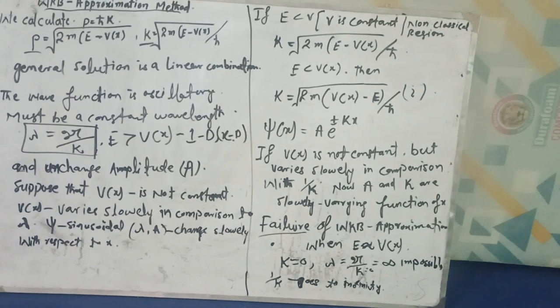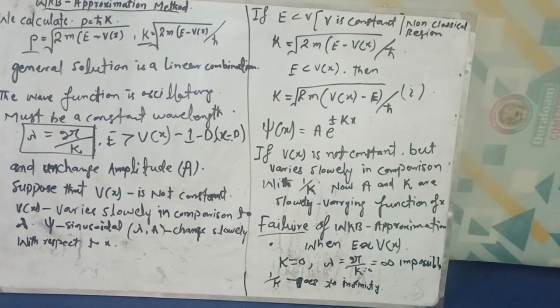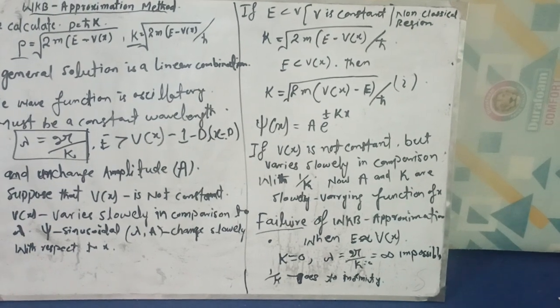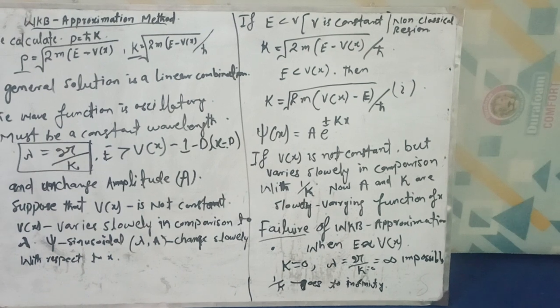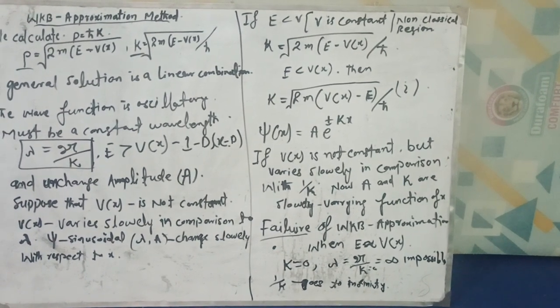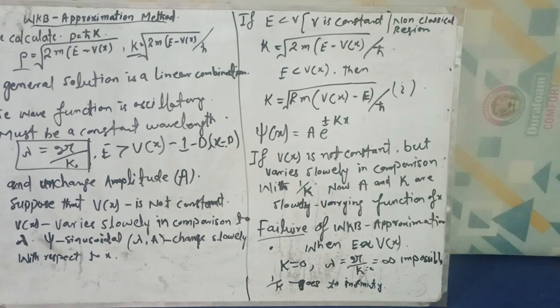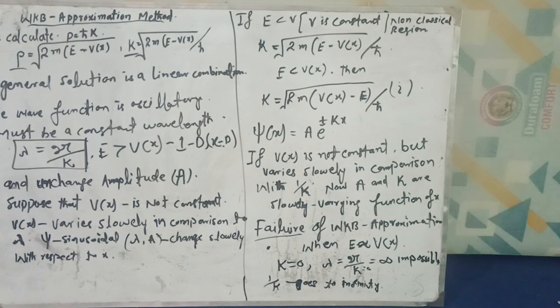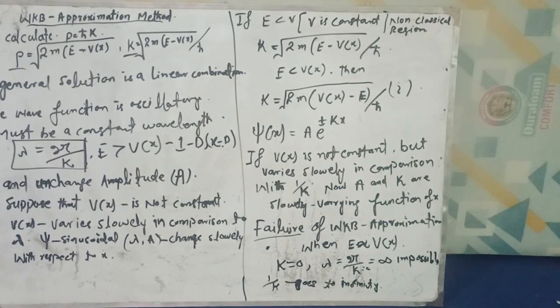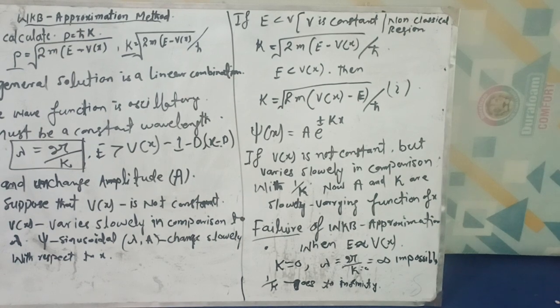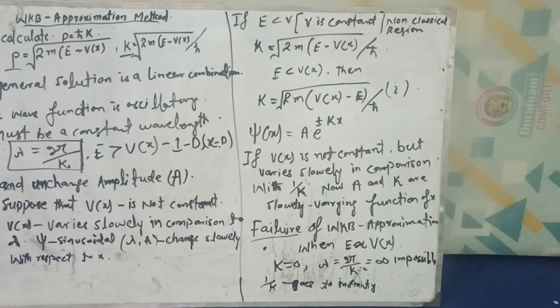In the first case, we consider the non-classical region. In the non-classical region, the energy of the particle will be less than the potential, and the potential will be constant. So the vector k for this case is 2m(E - V(x))^(1/2) / ℏ.